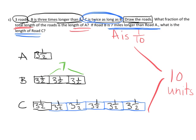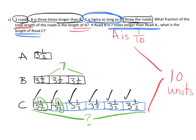The question is if road B is seven miles longer than road A, so that means each of these units is three and a half, what is the length of road C? So that means we have to add up all of these pieces. What I'm going to do is first add up the whole numbers. So we've got 3, 6, 9, 12, 15, 18. And now I'm going to put together the halves. So we have 18 so far. Half plus a half makes 19, half plus a half makes 20, half plus a half makes 21. So the length of road C is 21 miles.